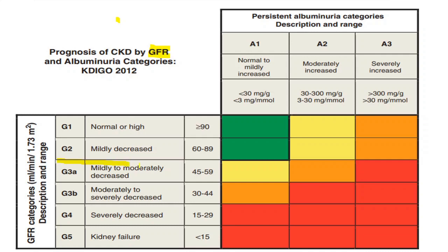This is the CKD classification table based on GFR and albuminuria as per KDIGO. An eGFR less than 60 fits the definition of CKD, starting from Stage 3 — Stage 3a and 3b. Stage 4 is GFR 15 to 30, and Stage 5 is less than 15. The color codes in the table indicate risk for progression: low risk, moderate risk, high risk, and very high risk for progression to chronic kidney failure.